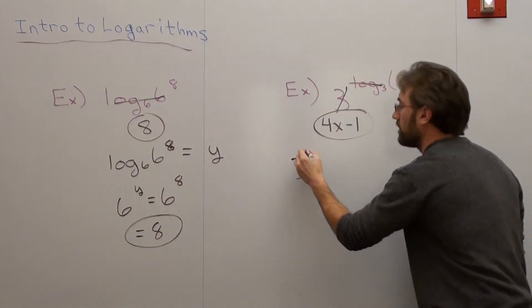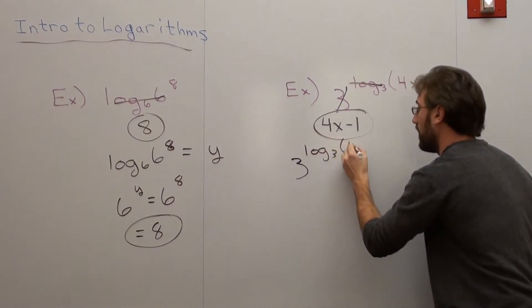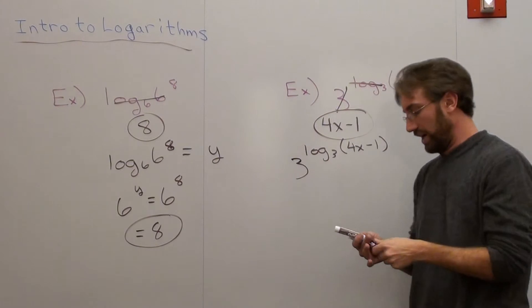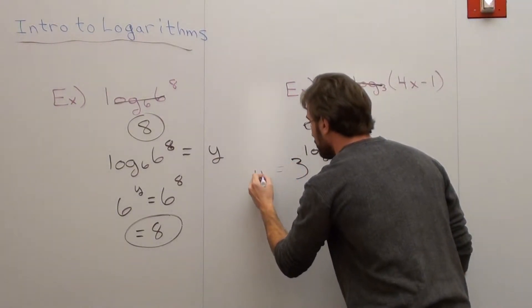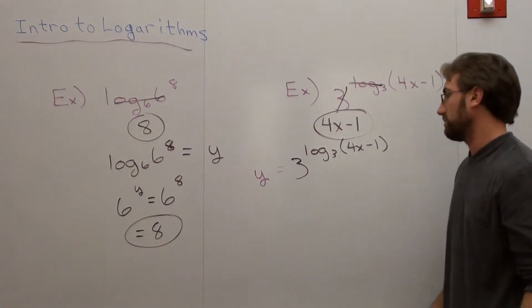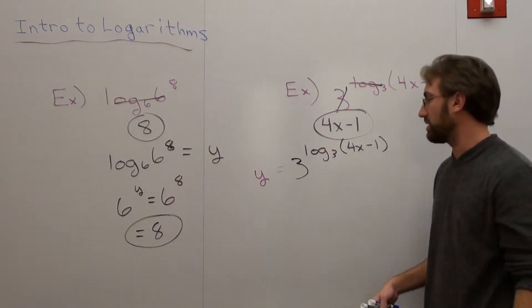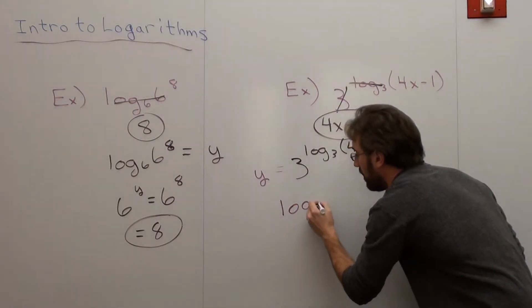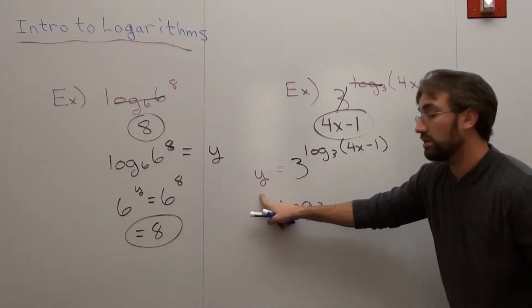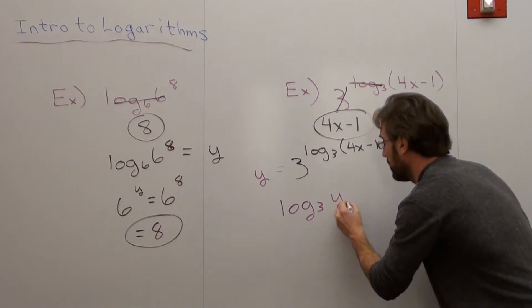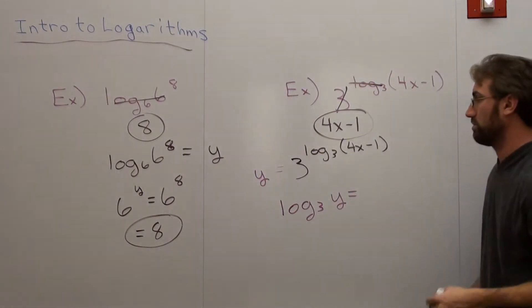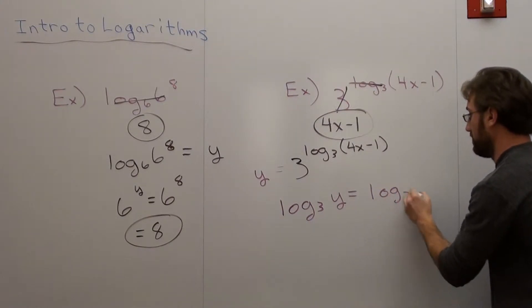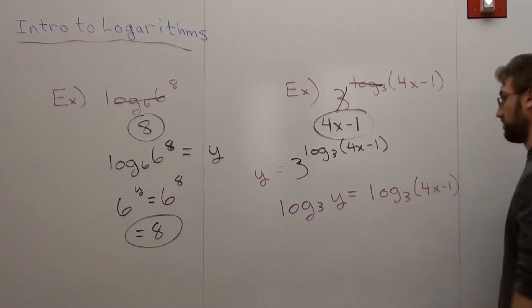3 to the log base 3 of 4x minus 1. Now, suppose it equals y. If we want to write this in logarithmic form, it's log base 3 of y equals log base 3 of 4x minus 1.